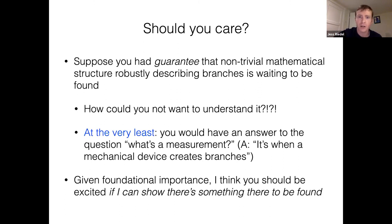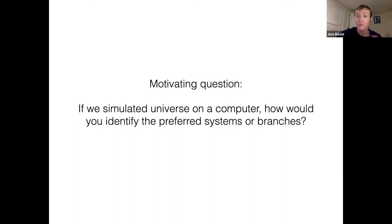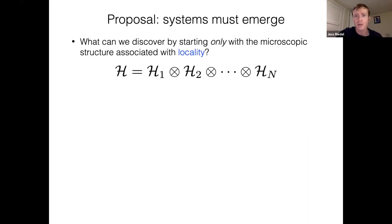One motivating question: if we were simulating the universe on a computer, how would you identify the preferred subsystems or the preferred branches? Think about the world as a bunch of atoms, maybe a quantum field theory. You're running a simulation on a giant computer and it produces a big wave function that becomes more and more entangled as time goes on. Presumably there's some sort of story to tell about the classical description. How would you figure that out? Would you be able to look inside a simulation of the universe and see the dinosaurs running around in some branches and alternative species running around in all the other branches? This numerical simulation question is going to motivate the approach I'll argue for.